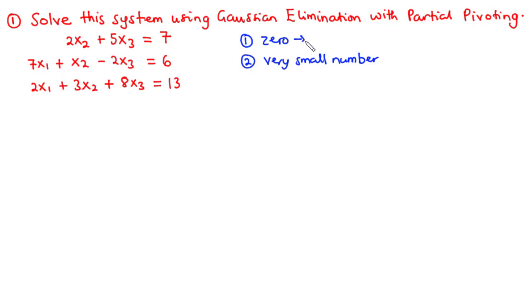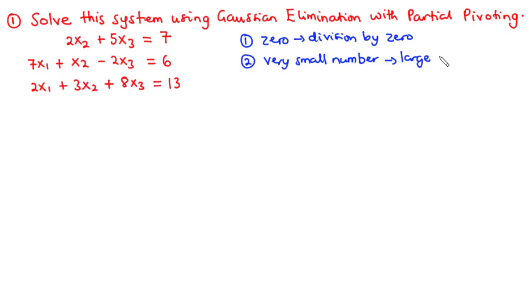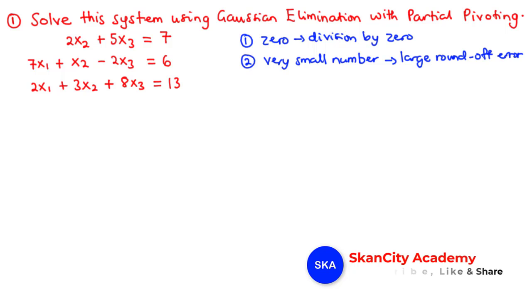If any of the pivot elements is a zero, then we encounter what we call division by zero, and this introduces an overflow error since division by zero is not defined. If any of the pivot elements is a very small number, then it introduces what we call large roundoff error into the system, and this may alter the solution — introducing large errors — which is not desired. These are the two main pitfalls of naive Gaussian elimination.